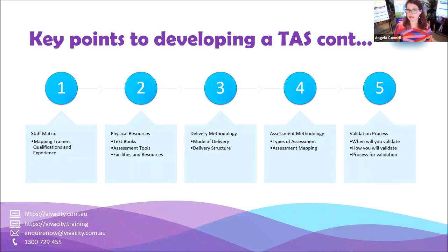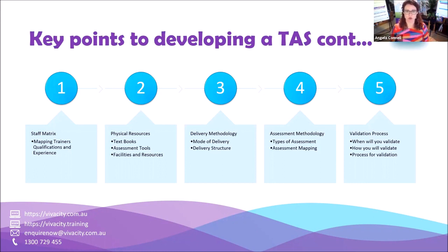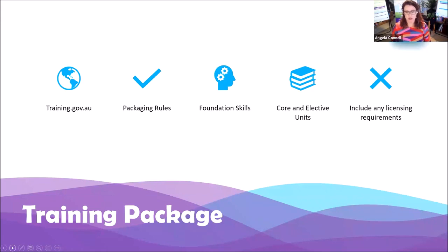It might be a good opportunity to review your validation schedule and when you're going to validate your assessment tools. It might be that you need to change some of your units. One I've recommended is that you incorporate an infection control unit as an elective — me personally, if I was running an RTO right now, I'd be looking at infection control as an additional unit for all my training. The way we work has changed forever.